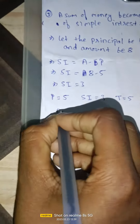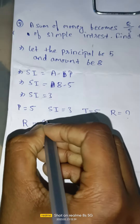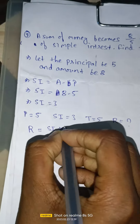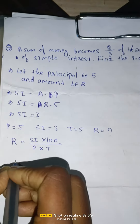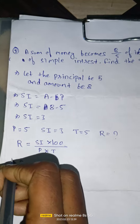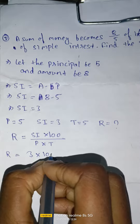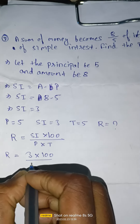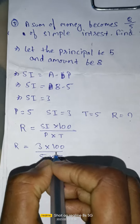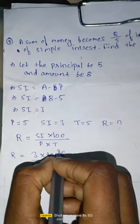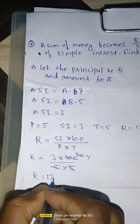R equals SI times 100 divided by P into T. So R equals 3 into 100 divided by 5 into 5, which gives R equal to 12.